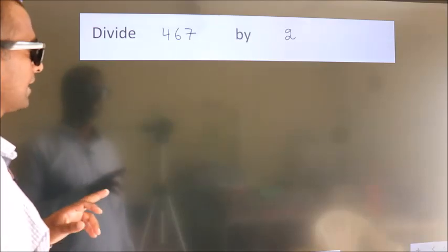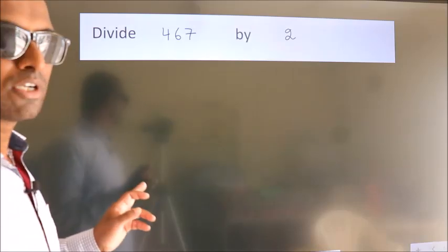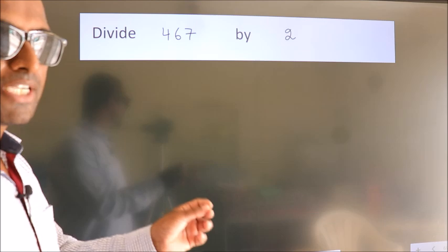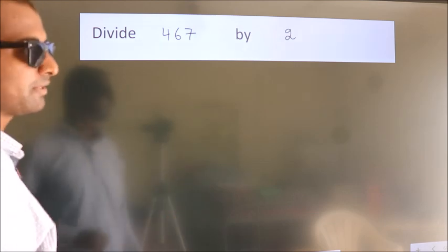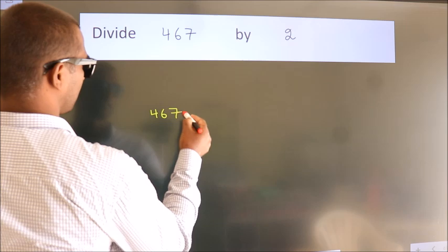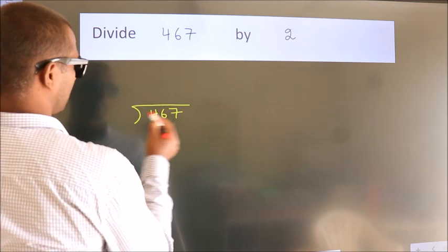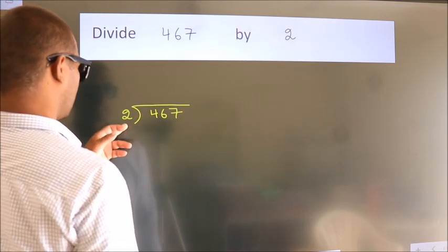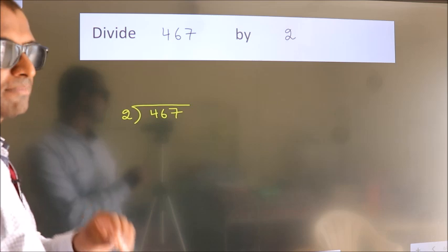Divide 467 by 2. To do this division we should frame it in this way. 467 here, 2 here. This is your step 1.